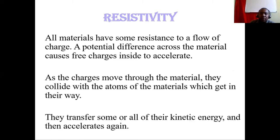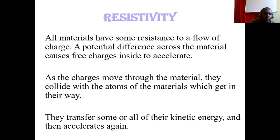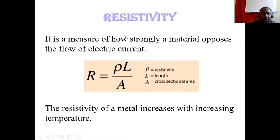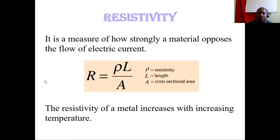Another term is the resistivity of materials, which tells us how much impedance charges will have when flowing through a specific conductor. When charges move in a conductor, they collide with atoms in the structure, causing them to slow down and change path. This effect is recorded as the resistivity of a material, represented by rho. Resistance R equals resistivity times the length of the conductor over the cross-sectional area.